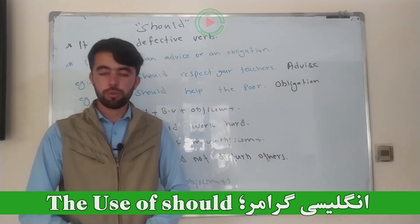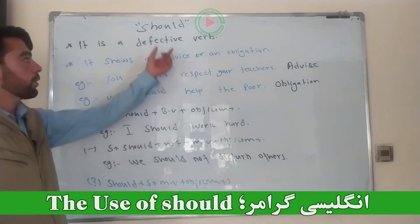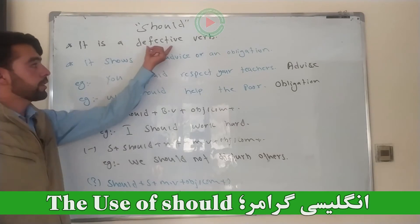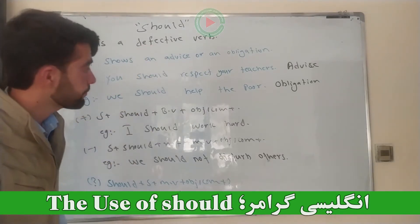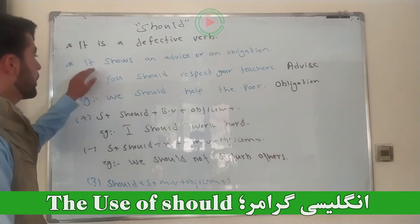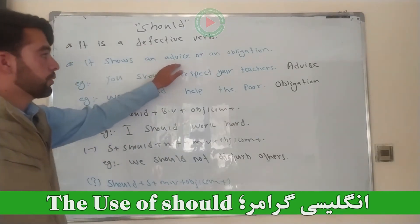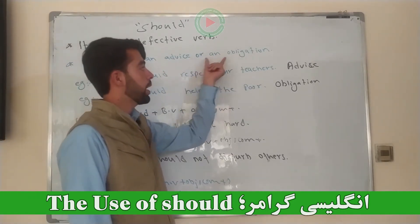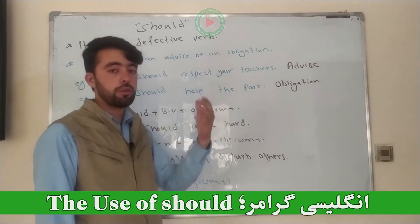Should is a defective verb. It shows advice or obligation. For example: 'should' — it indicates a recommendation or duty.